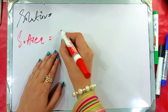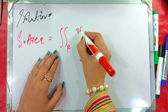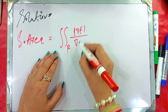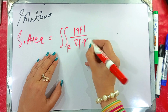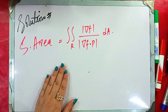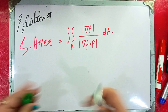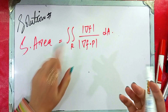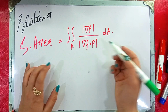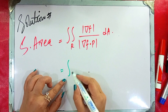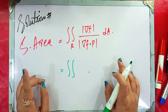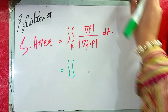The surface area formula is: integral over region of |∇f| divided by |∇f · p|, times dA. Now we will put all the values into this formula. We have the limits, we have the gradient of F, and we have the dot product. We have two integrals — one in r and one in θ — so we will use both limits here.